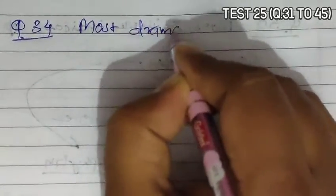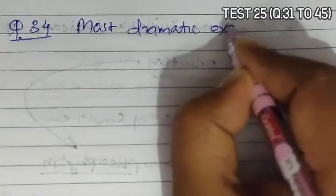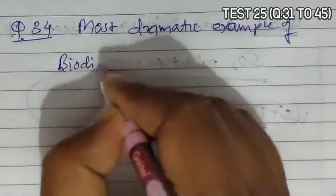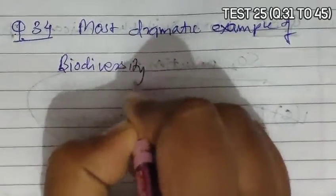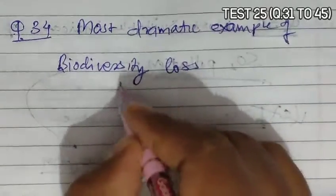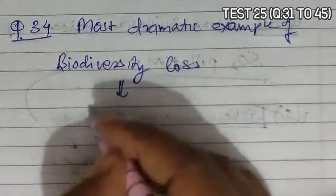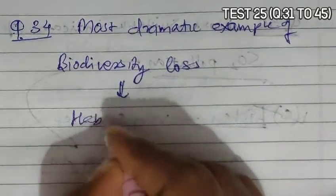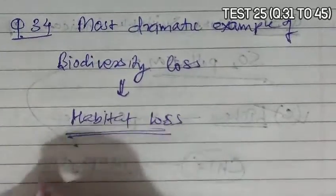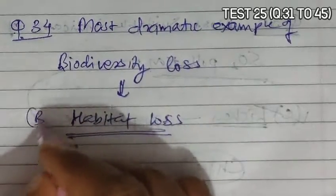Question 34 asks about the most dramatic example of biodiversity loss from tropical rainforests. The main dramatic example is habitat loss and fragmentation, which is among the primary causes of biodiversity loss. So B is the correct answer.